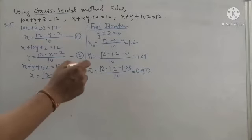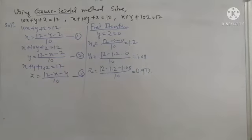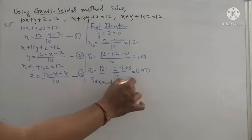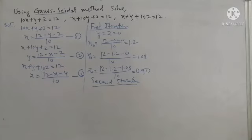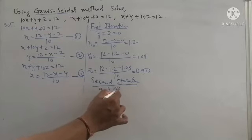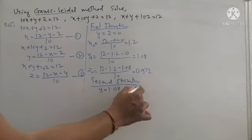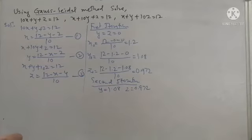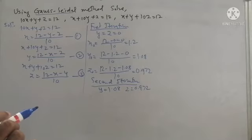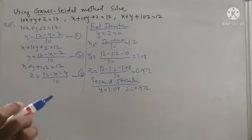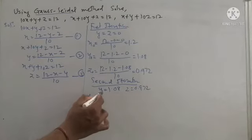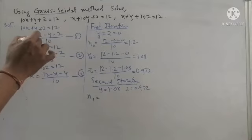We observe that the initial roots y = 0 and z = 0 give new roots y naught and z naught which are not equal to zero, so we proceed to the second iteration. For the second iteration, we take initial values of y = 1.08 and z = 0.972. In Jacobi's method we take initial values of x, y, z all three unknowns, but in Gauss-Seidel we take only y and z to evaluate x.